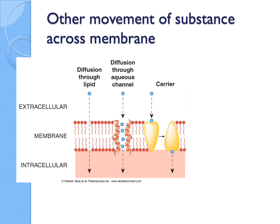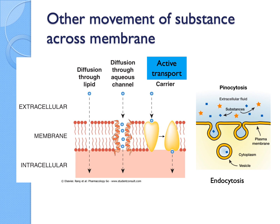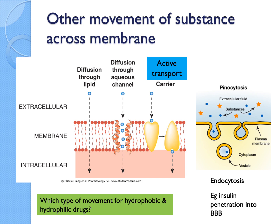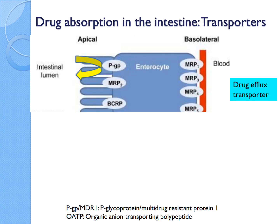Other routes include the paracellular channel, active transport through carrier proteins, and pinocytosis or endocytosis. Endocytosis is more prominent for just very few molecules. One example is insulin through the blood-brain barrier because the blood-brain barrier is a very tight barrier. Insulin is a big peptide molecule, so for it to go through it cannot just diffuse through — it needs this special route. There are also some efflux transporters — pumps — that the body uses when it thinks a molecule is toxic, kicking it out of the system.